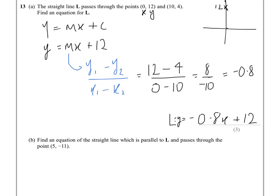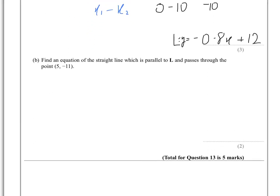In part B then, it asks us to find an equation of the straight line which is parallel to L. So immediately we know since it's parallel, the gradient minus 0.8 will be the same and it passes through (5, -11).